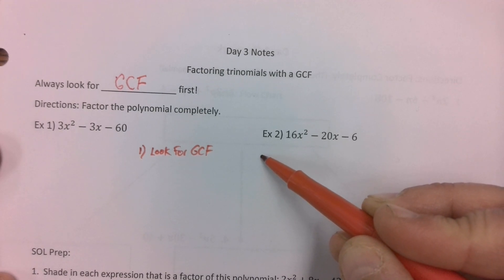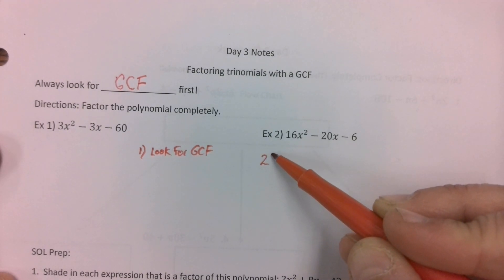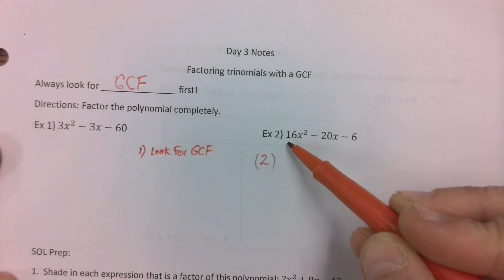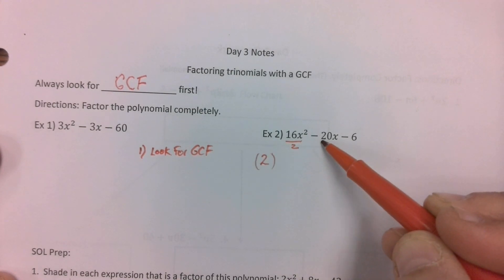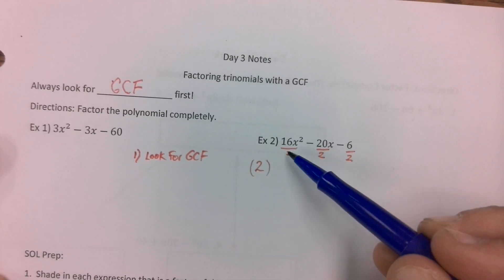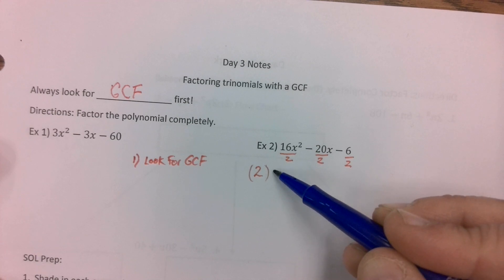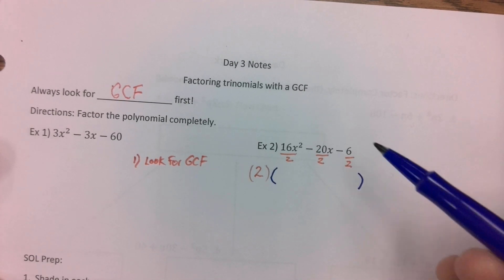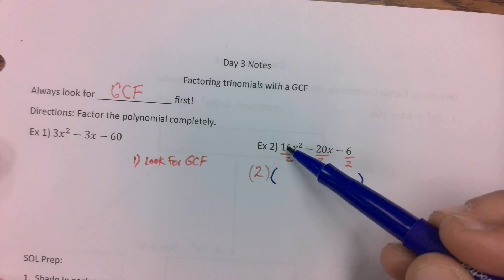So I am going to write a 2 down in front which is part of our problem now and I'm going to divide that 2 out, I'm factoring it out, so dividing out, opposite of multiplying, the 2 from each of our 3 terms. I'm going to put the leftovers in parentheses below that and that is what we're going to work with to factor.